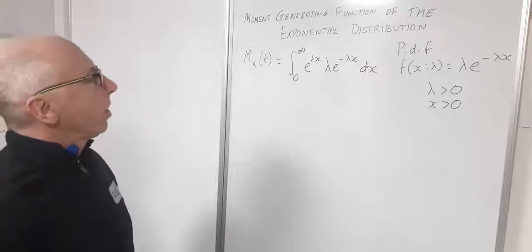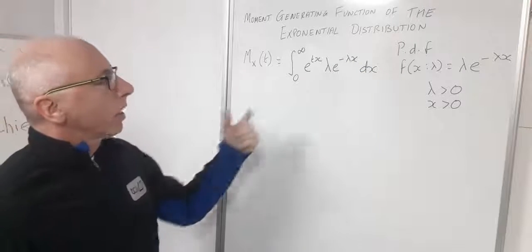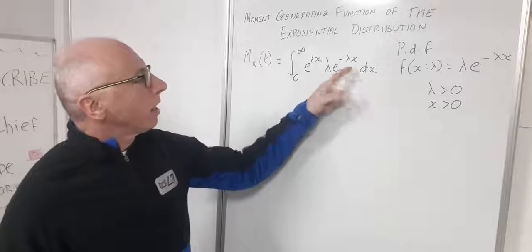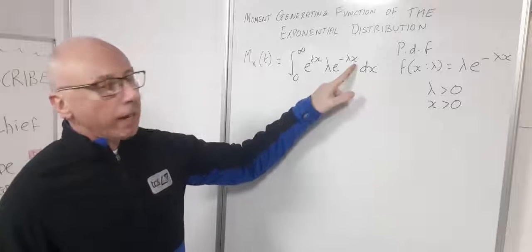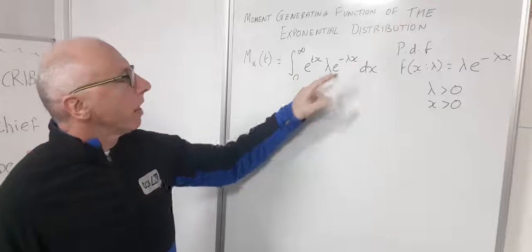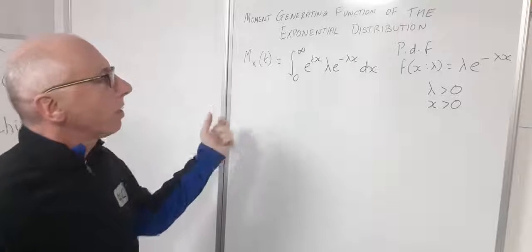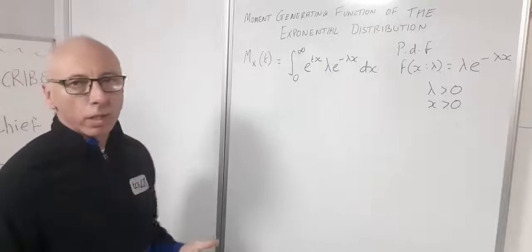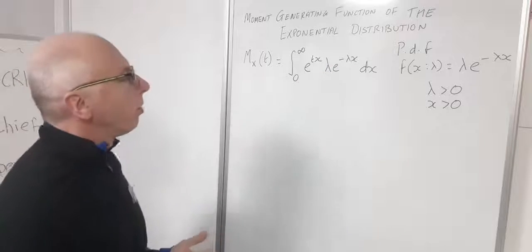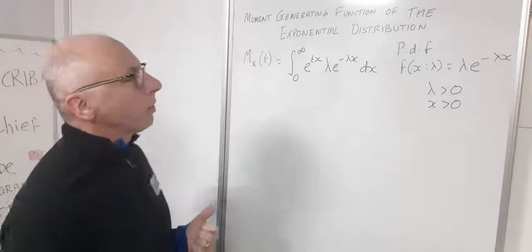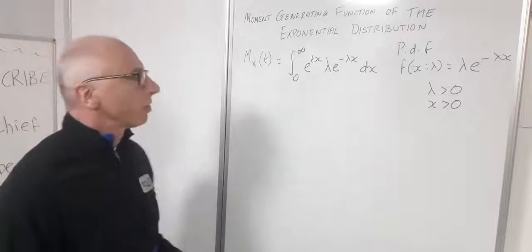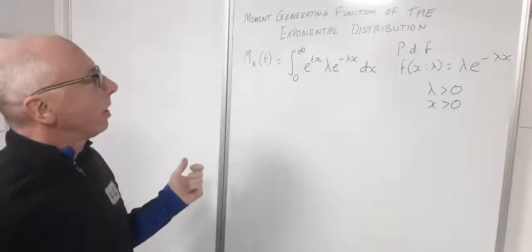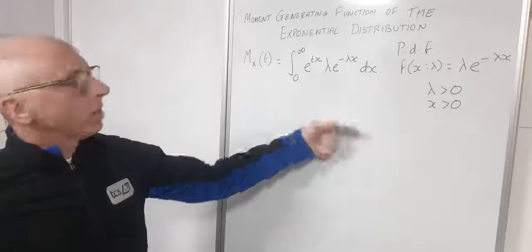The plan is to integrate this function, integrate x out of it, and then get something in terms of t and λ. That's our goal in finding moment generating functions. So now let's do this integral.